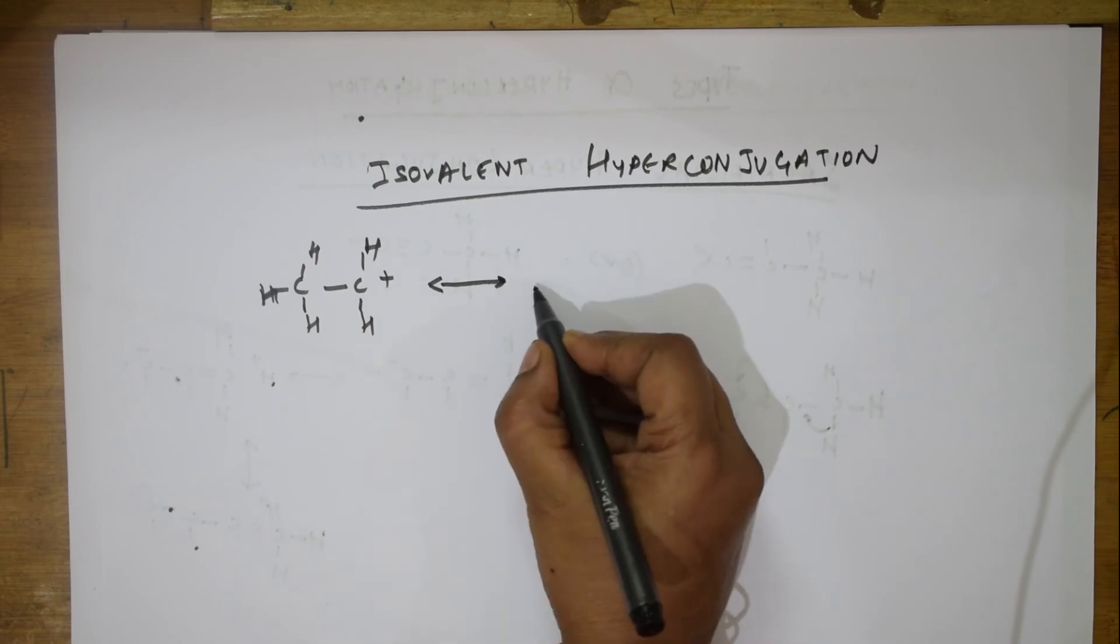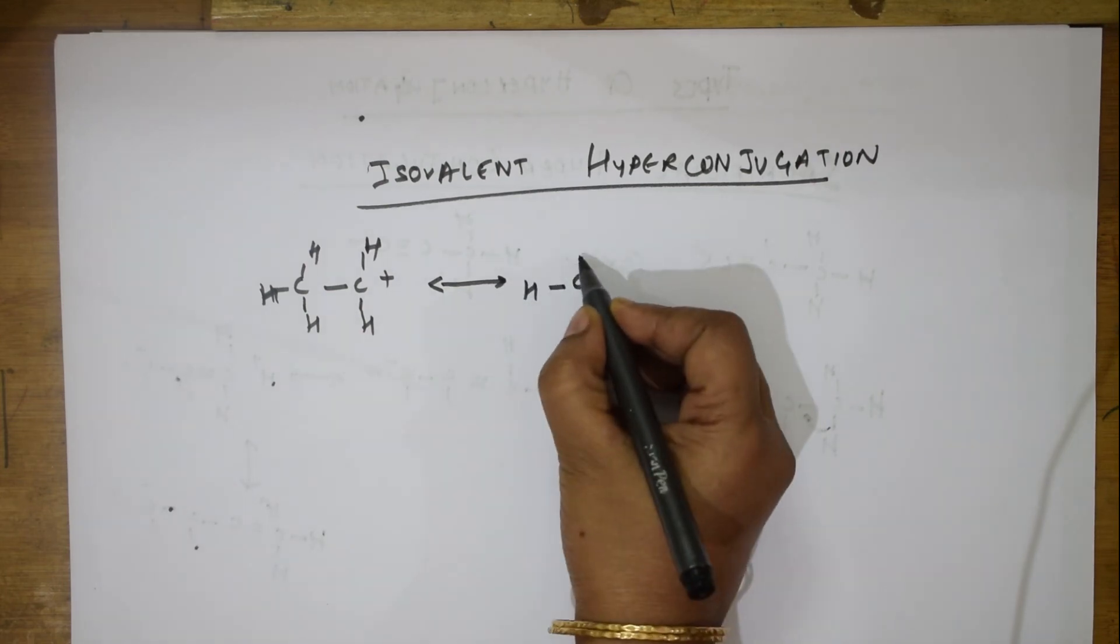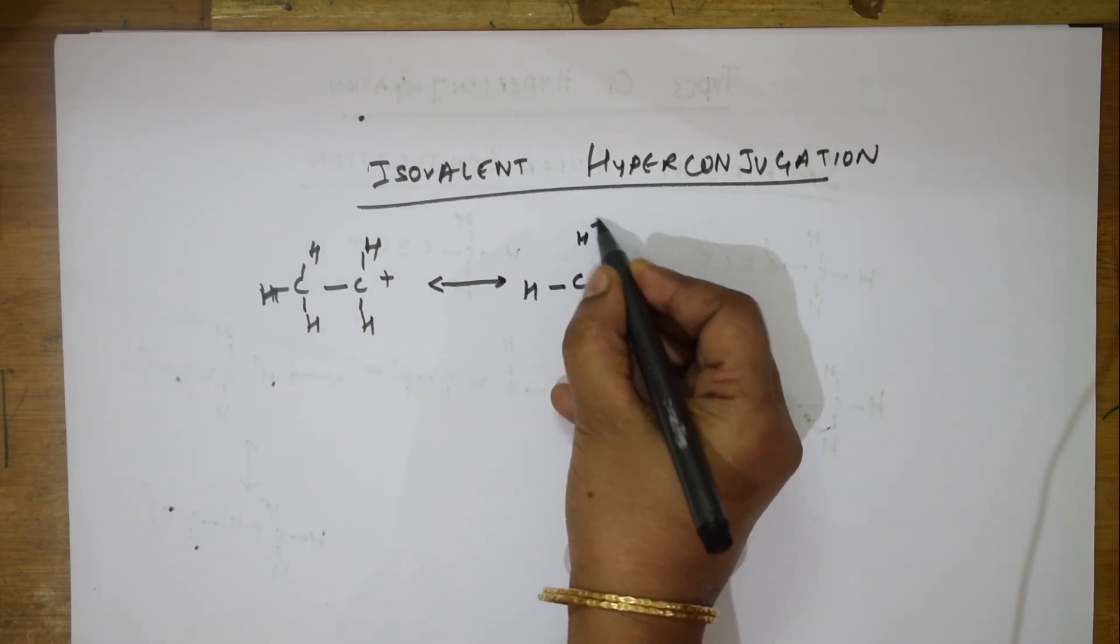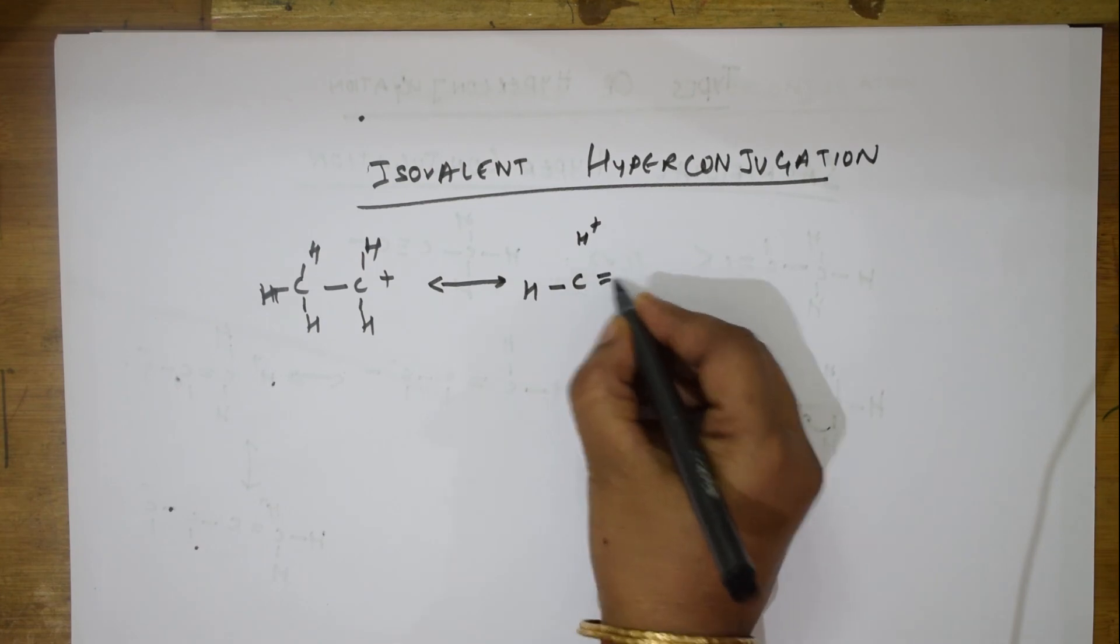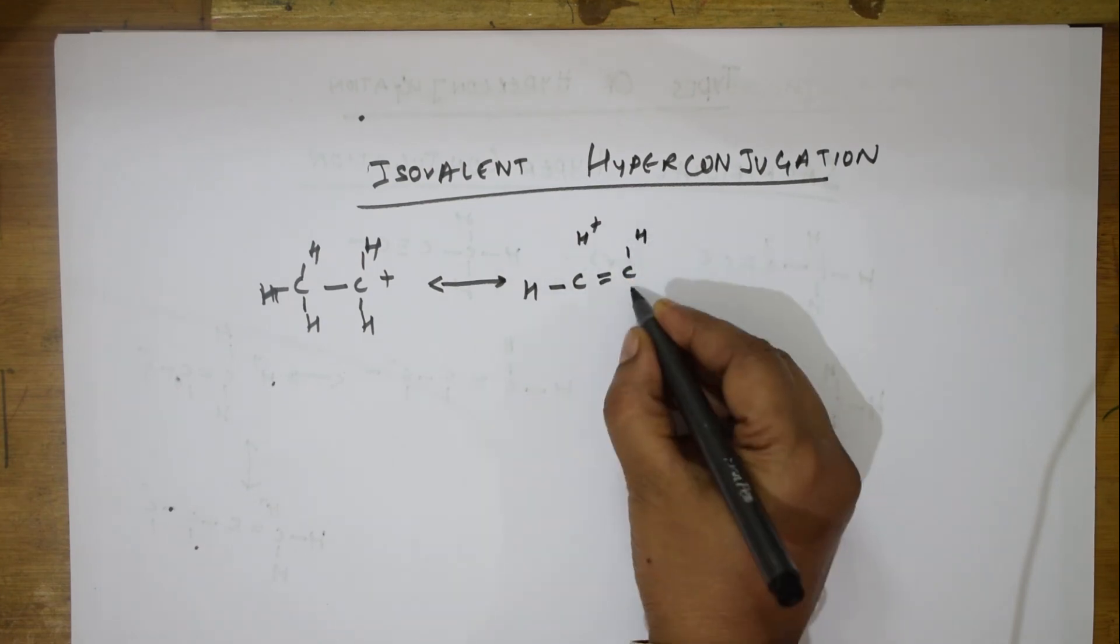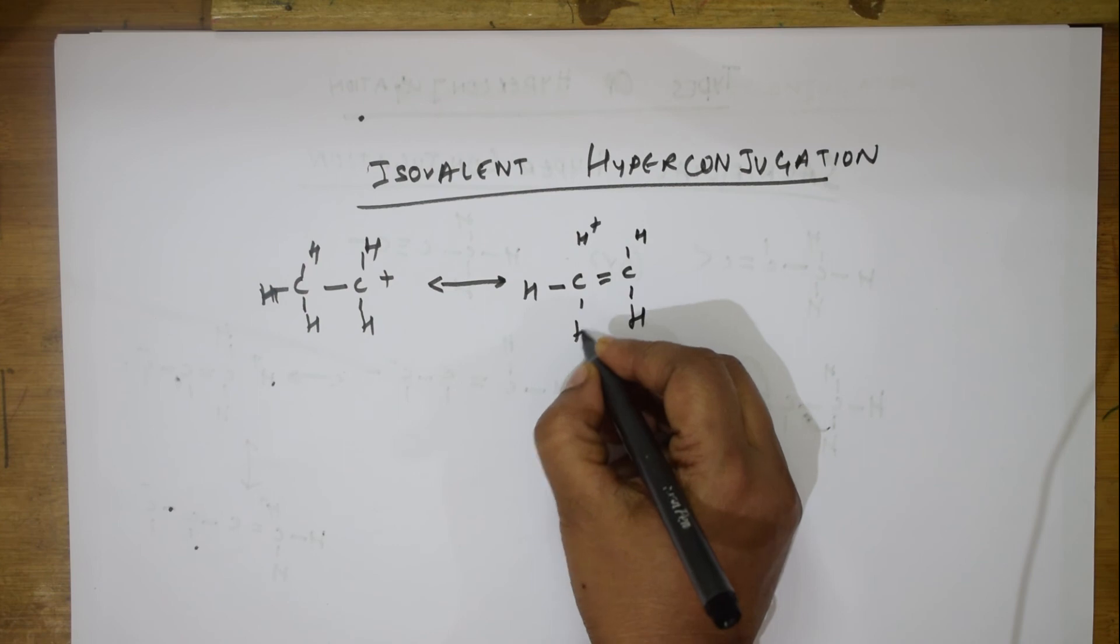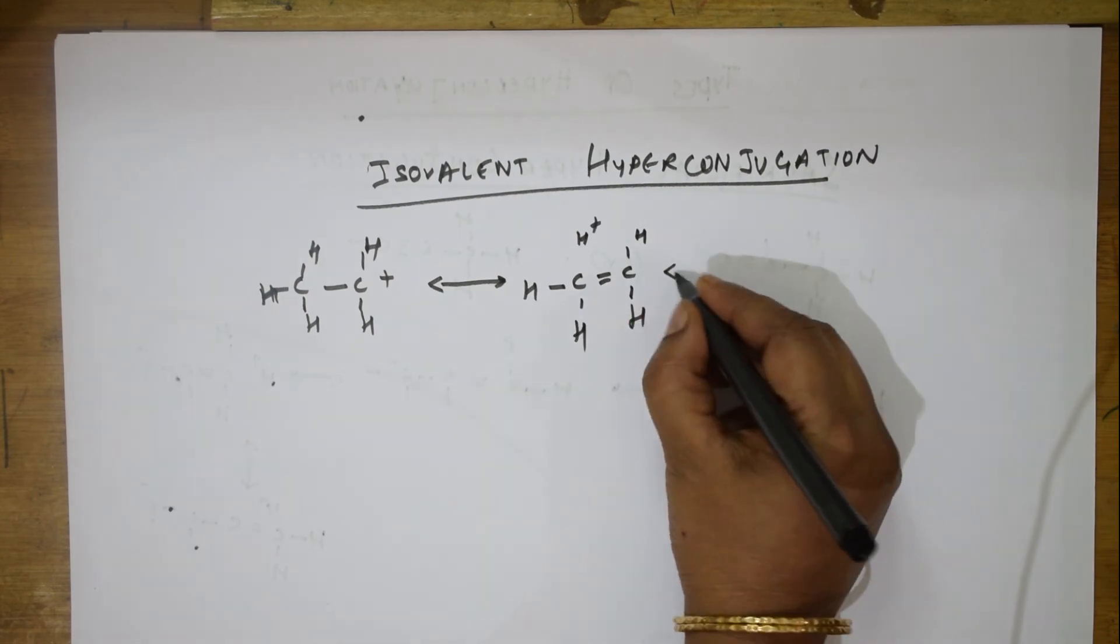I will draw the resonating structures for this. H plus for this, double bond, hydrogen, hydrogen, hydrogen. This is again H plus, this hydrogen.